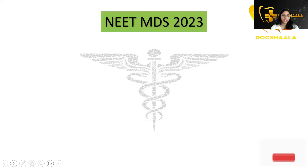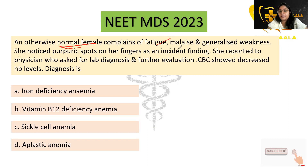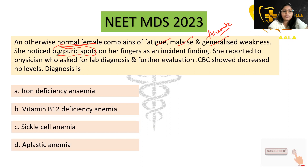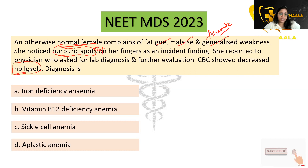Now for an exam question from a previous paper — a clinical case: an otherwise normal female complains of fatigue, malaise, and generalized weakness, indicating anemia. She noticed purpuric spots on her fingers as an incidental finding. She reported to a physician who asked for lab diagnosis; CBC showed decreased hemoglobin levels. The options were: iron deficiency anemia, vitamin B12 deficiency anemia, sickle cell anemia, and aplastic anemia.